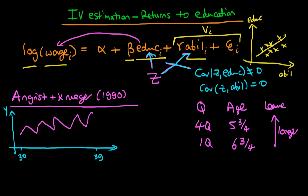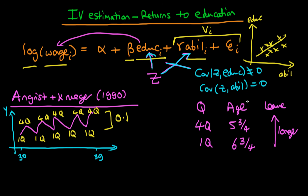They observed a sawtooth pattern in the number of years of education individuals tended to spend in school. When they looked at the dips in this pattern, they found the troughs corresponded to individuals born in the first quarter of a year, and the peaks corresponded to those born in the fourth quarter. This illustrated that their instrument was having an effect on years of education. They estimated that the difference in average years of schooling between the two cohorts was about 0.1 years — because not everyone who can leave at 16 does so, but there was still a clear relationship between the instrument and years of education.